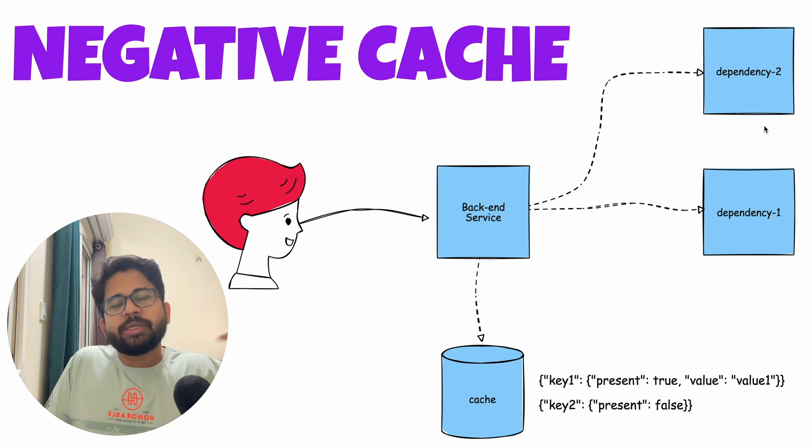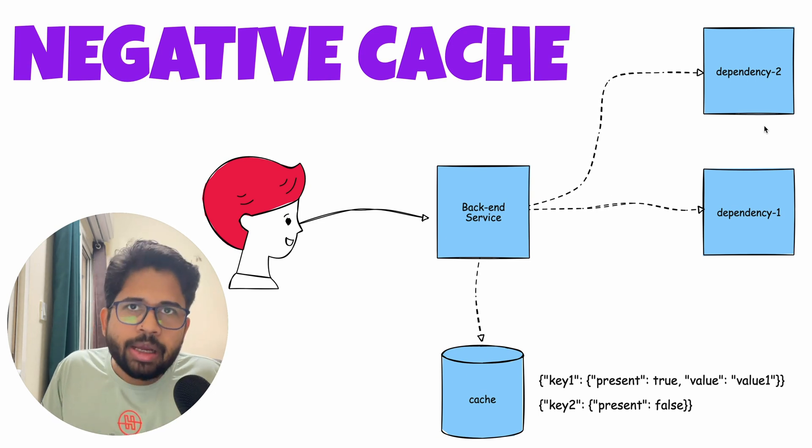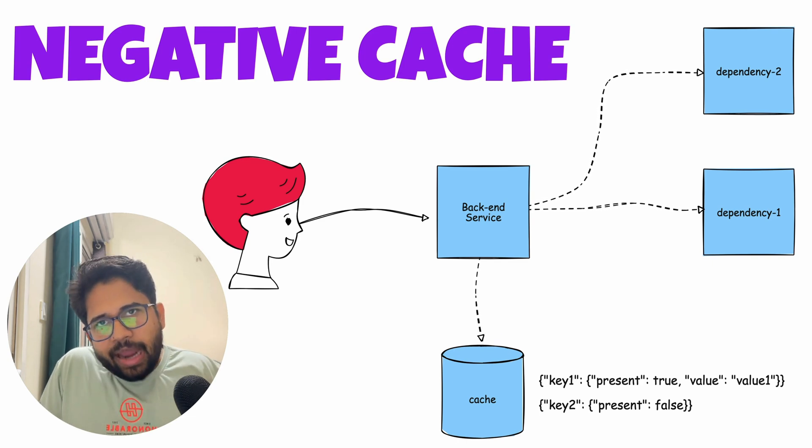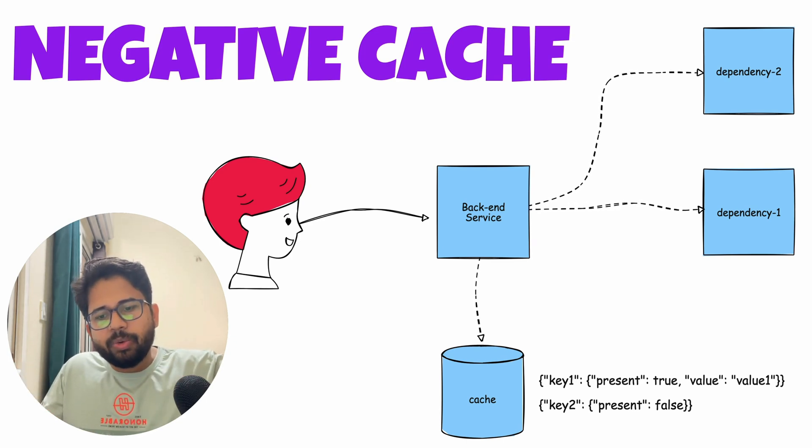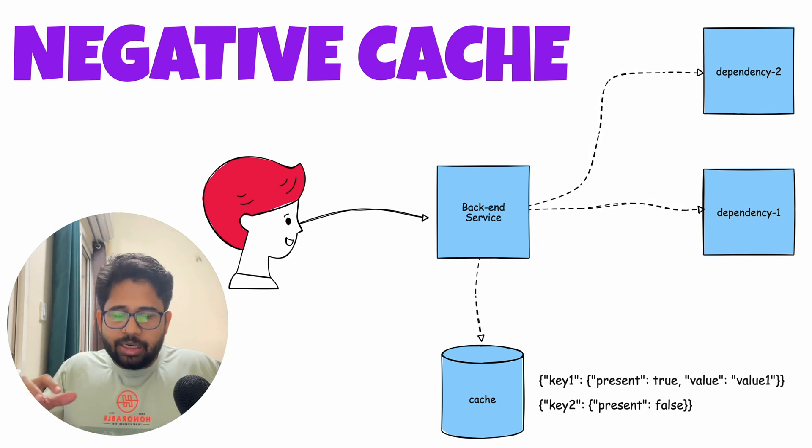It requires special handling because now you have to handle one extra case of when the key is not present in your overall system. So it can become a wrong approach if your system is very simple and still you are trying to introduce it. But in a highly scalable system, it's important to cache the negative responses as well.